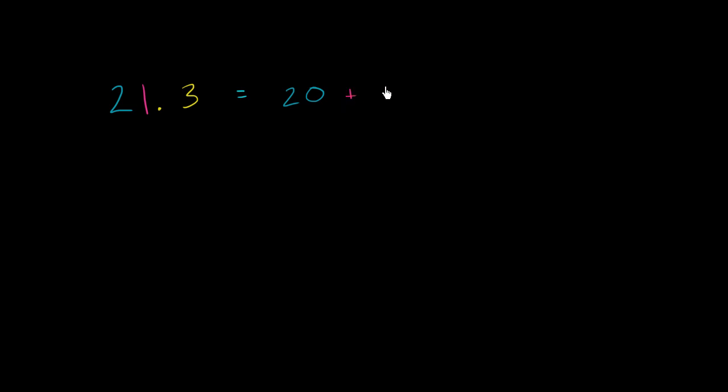This 1 is literally equal to 1. And then this 3 is 3 tenths, so plus 3 tenths. But now I want to rearrange or regroup the value in these places.